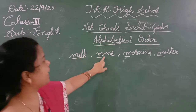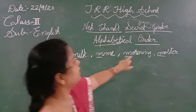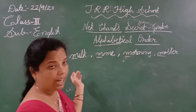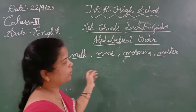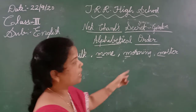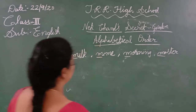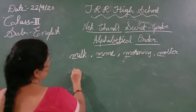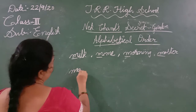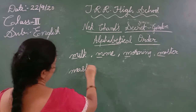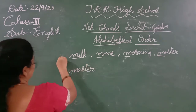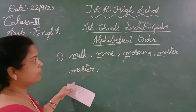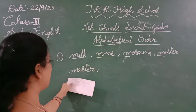Here the second letters are: I, I, O, and A. So in alphabetical order, A comes first — so the first word will be master.